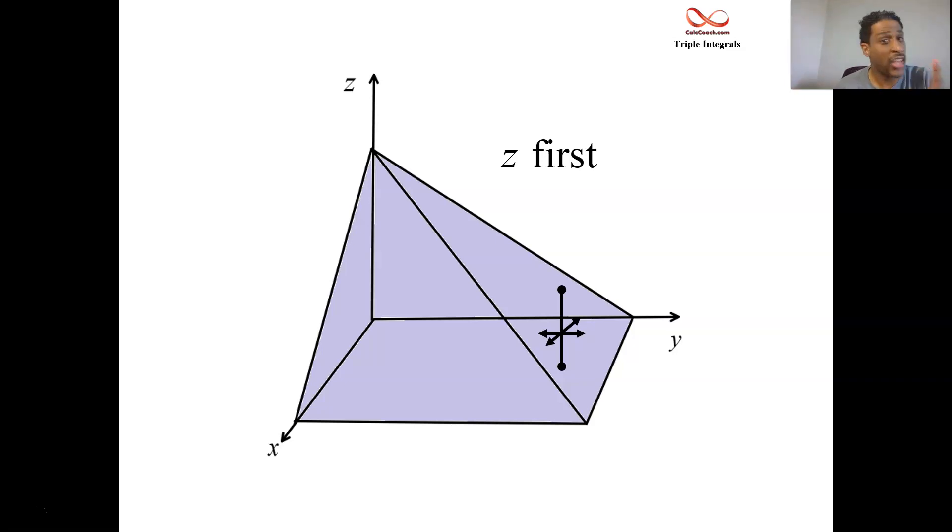When you're to the rightmost part, the upper bound is the plane that is on the right. But if you move to the leftmost part, the upper bound is the plane that's on the front. These are slanted planes. We're in the first octant. And there's the coordinate planes. And then there's these two slanted planes. The name of this shape is a tetrahedron.